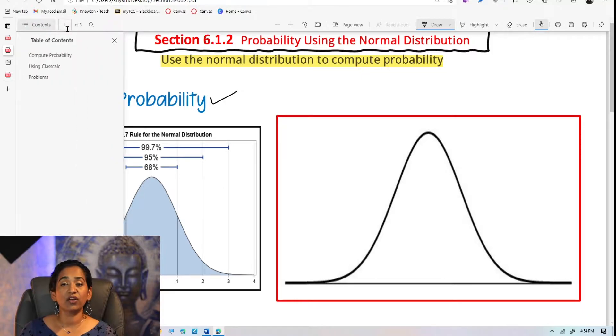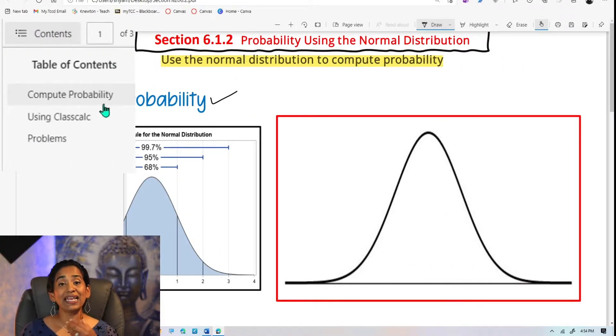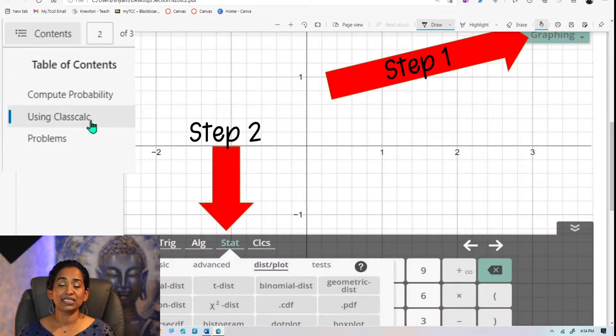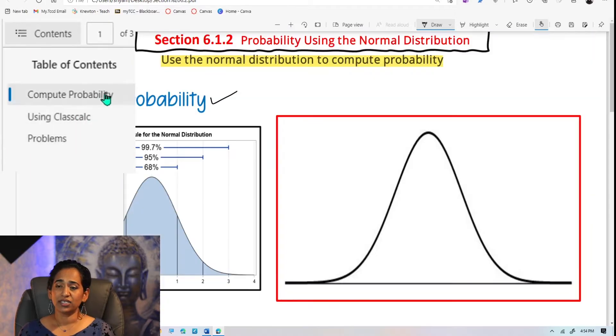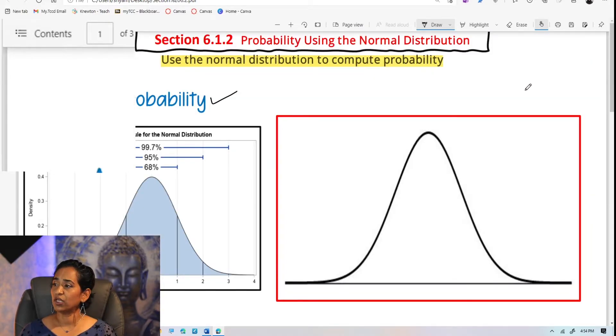When I click on table of contents, as you can see, I name my tiles or my slides when I'm creating so my students can access them. So the first one is compute probability, second one is how to use class calc, and the third one is the problems. So let's go here.